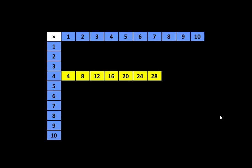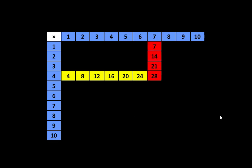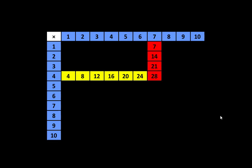I'll count the multiples of 4: 1, 2, 3, 4, 5, 6, 7. And 28 is the 4th multiple of 7. I'll count the multiples of 7: 1, 2, 3, 4. Understanding that 28 is a multiple of both 4 and 7 is very important.